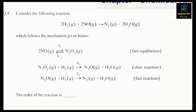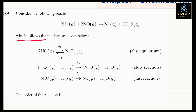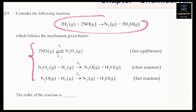Consider the following reaction: 2H₂(g) + 2NO(g) → N₂(g) + 2H₂O(g). This is our reaction, which follows the mechanism given below. For this reaction, they have given a three-step mechanism.